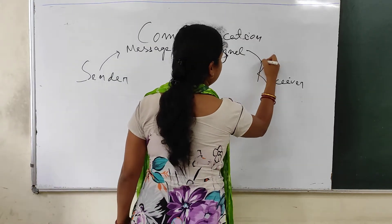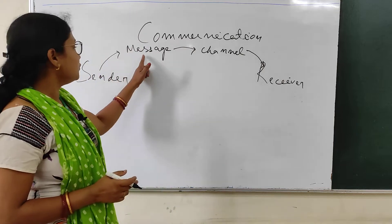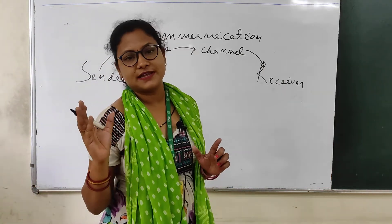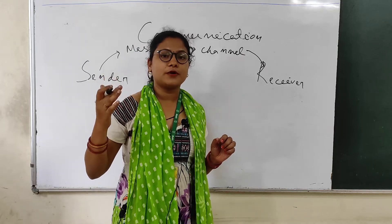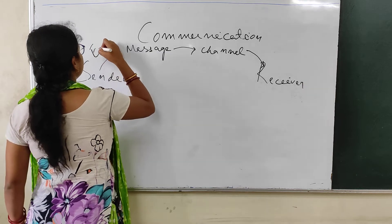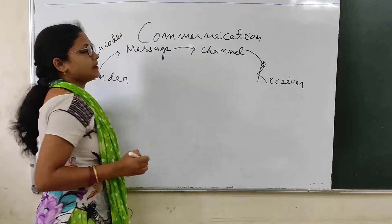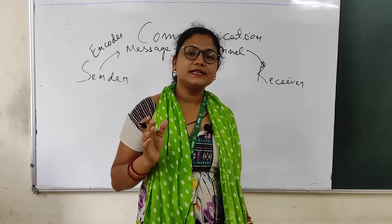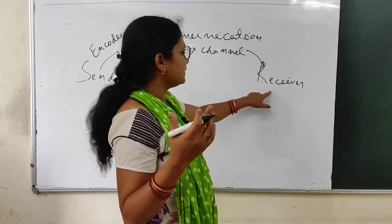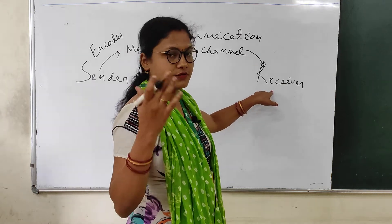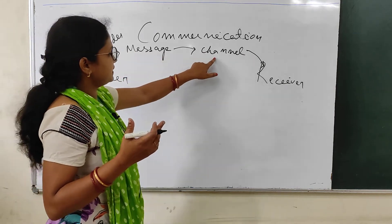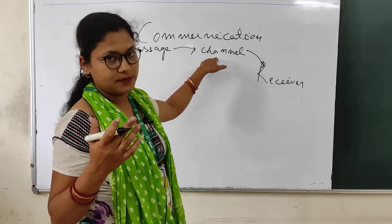The receiver receives the message. But to send the message, a sender needs to form the message in his or her mind. The process of forming this message is known as encoding. The sender encodes the message and sends it to the receiver through a channel of communication.